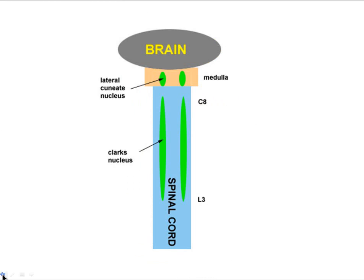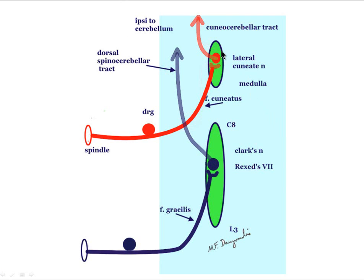Looking at a longitudinal section of the spinal cord, dorsal spinal information comes in from a muscle spindle at the dorsal root ganglia, travels up the fasciculus, and synapses in Clark's nucleus between C8 and L3. The true dorsal spinal cerebellar tract then comes out of Clark's nucleus and travels in the lateral funiculus to paravermal areas of the cerebellum via the inferior cerebellar peduncle.